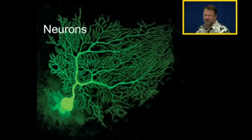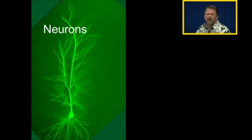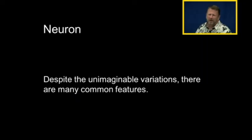This is a picture of a Purkinje cell in the cerebellum. This is a picture of a pyramidal neuron in the cerebral motor cortex. Despite the unimaginable variations, there are many common features amongst neurons.